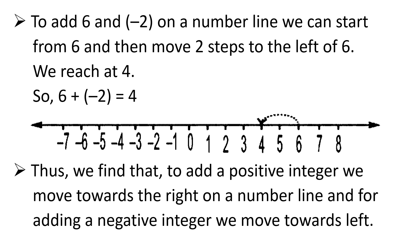We also saw that to add 6 and minus 2 on a number line, first we will draw a number line. Then we start from 6 and move two steps to the left of 6 as shown in the figure. We reach at 4. So 6 plus minus 2 is equal to 4. Thus, to add a positive integer we move towards the right on a number line, and for adding a negative integer we move towards the left.